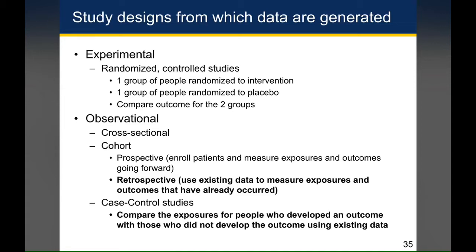The way you account for confounding in the experimental group, the randomized control study, is different from the observational group. In the experimental group, you do not have to worry about confounding. In the observational group, you do have to worry about confounding. Typically that's dealt with either through stratification on the confounder — as was done by Bradford Hill on that last slide, where he looked at different age groups and men and women separately — or you can do an adjusted analysis using regression, which we won't cover in this class.